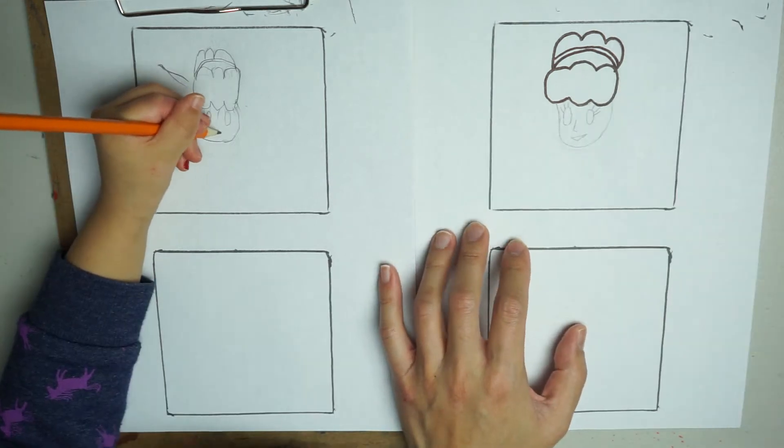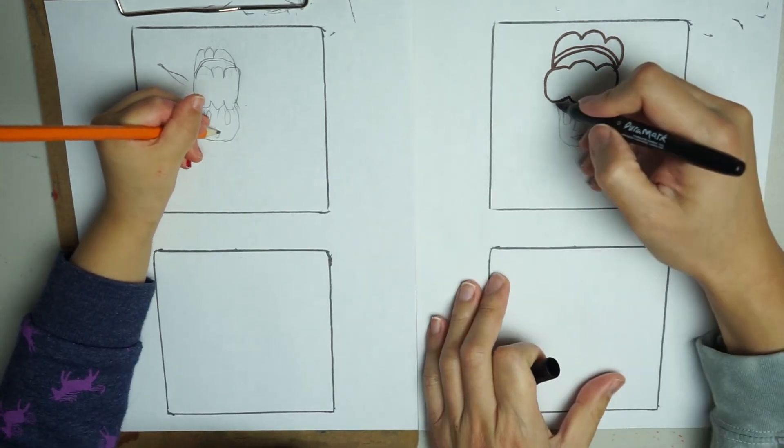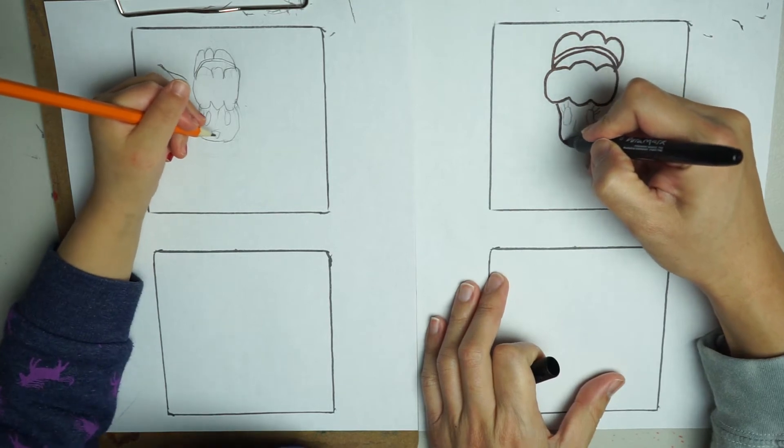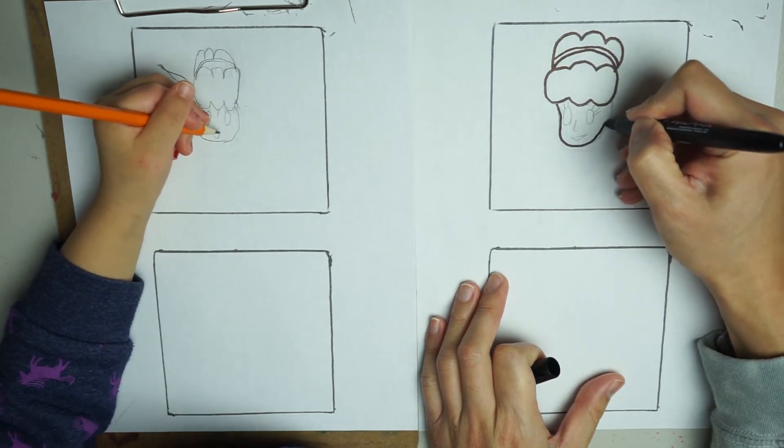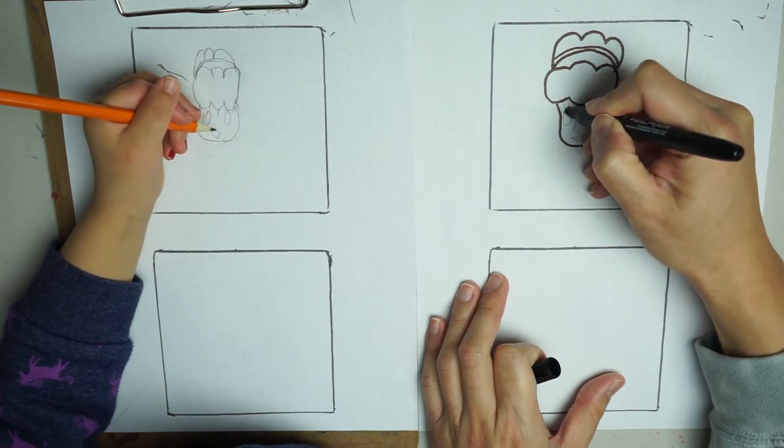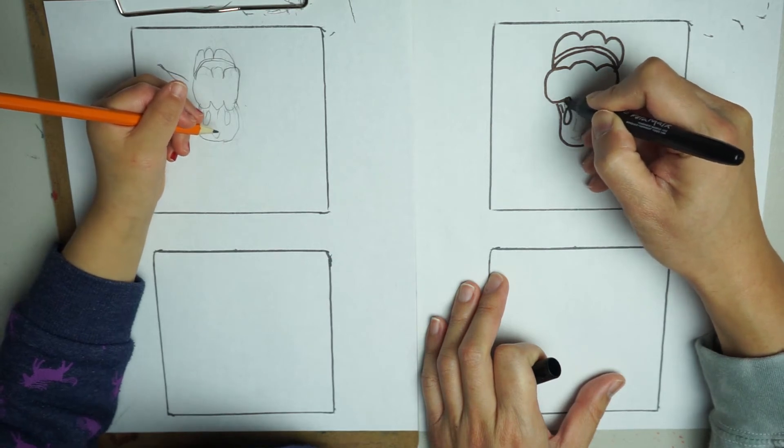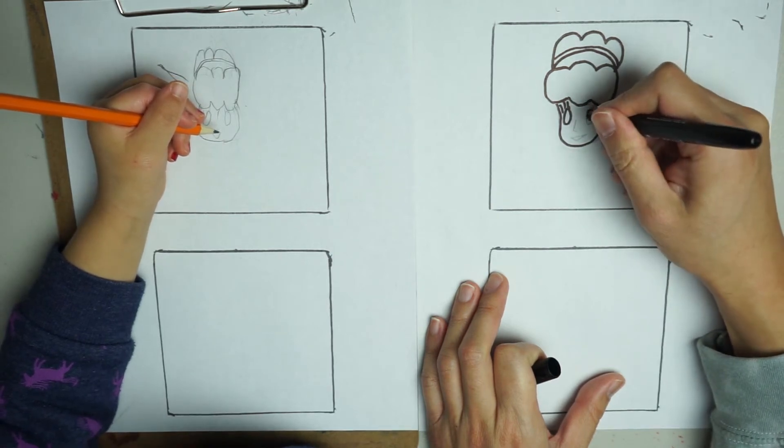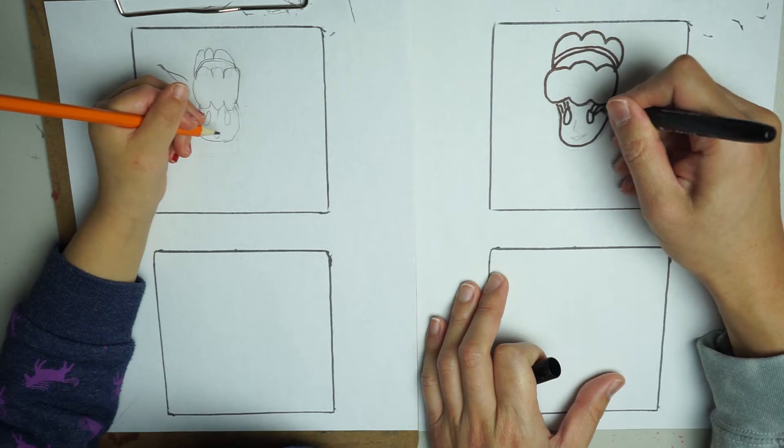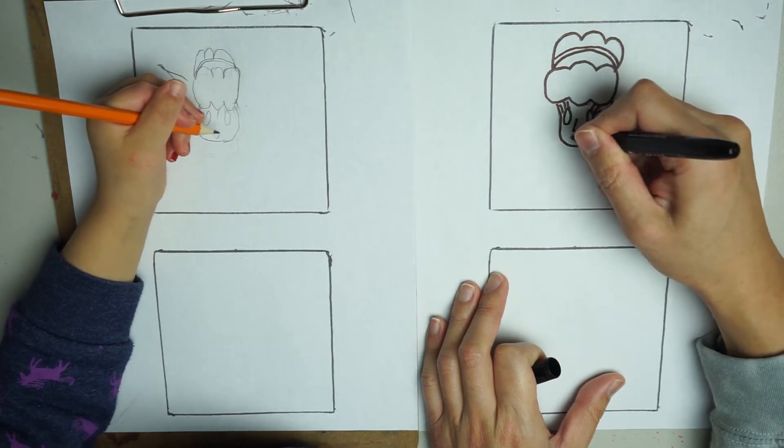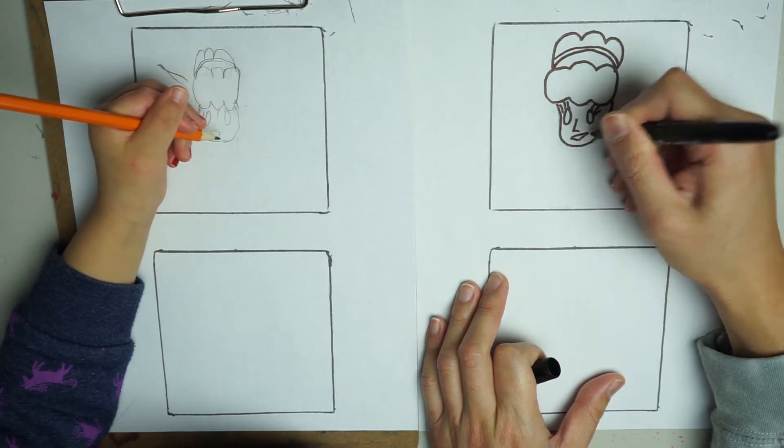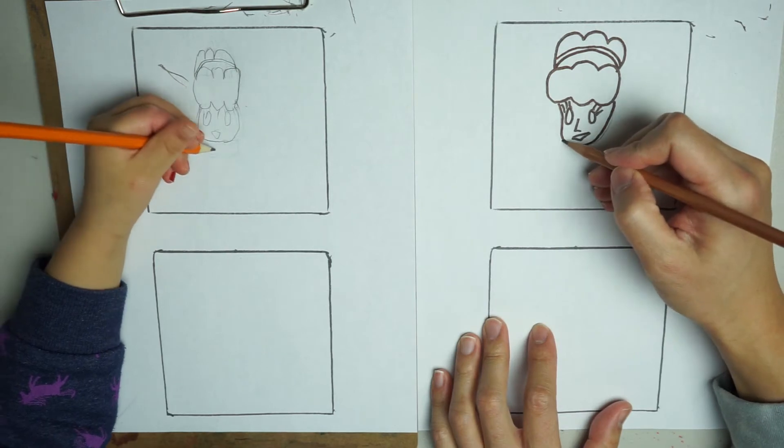Eyes are oval here. You have eyelashes on it. She's got a triangle nose and a triangle smile. Okay, and then we're going to draw her dress, okay? Her dress.